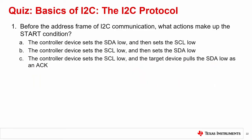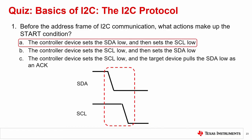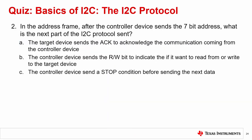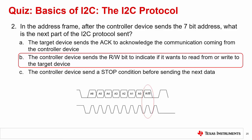Question one: Before the address frame of I2C communication, what actions make up the start condition? The answer is A. The controller device sets the SDA low and then sets the SCL low. Question two: In the address frame, after the controller device sends the 7-bit address, what is the next part of the I2C protocol sent? The answer is B. The controller device sends the read-write bit to indicate if it wants to read from or write to the target device.